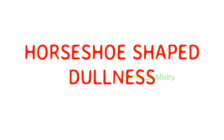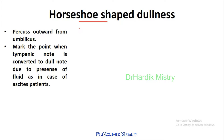Now, Horseshoe shape dullness in cases of ascites patients — how to find out the Horseshoe shape dullness. You have to start percussion from the umbilicus and try to move outward, toward the lateral side of the umbilicus, while you are doing the percussion each time.